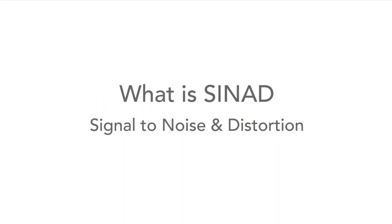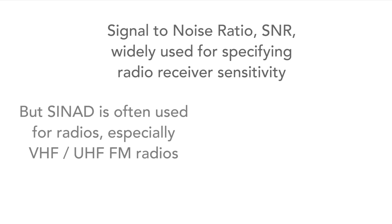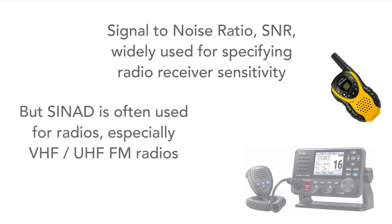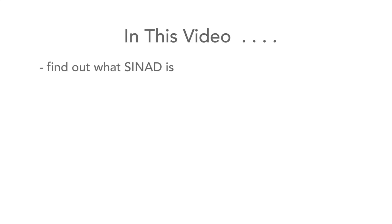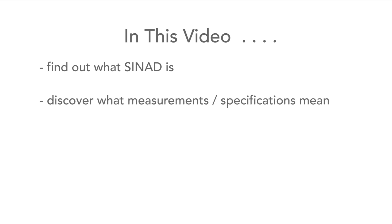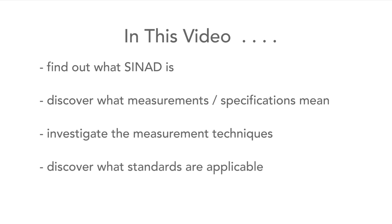Signal-to-noise ratio, or SNR, is one popular method of defining radio receiver sensitivity, but another measurement that's often seen — especially for VHF and UHF FM communications radios — is called SYNAD. In this video we'll look at what SYNAD is, investigate what a typical measurement means, check out the way it's measured, and take a look at some of the standards associated with SYNAD and where they're used.